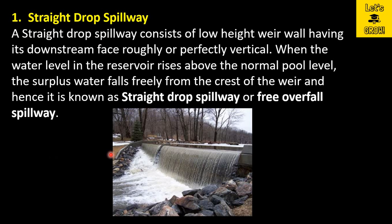The first one is the straight drop spillway. A straight drop spillway consists of a low-height weir wall having its downstream face roughly or perfectly vertical. Here in this image you can see a low-height weir constructed like this. When the water level in the reservoir rises above the normal pool level, the surplus water falls freely from the crest of the weir, and hence it is known as a straight drop spillway or free overfall spillway.